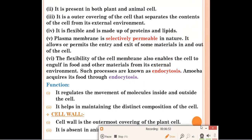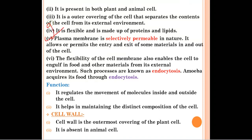This is a very important point — questions are asked about why the plasma membrane is called a selectively permeable membrane. Plasma membrane is called selectively permeable because it allows the entry or exit of only a few substances inside or outside the cell. If a question is asked, write: plasma membrane is called selectively permeable because it allows or permits the entry and exit of only a few materials in and out of the cell.